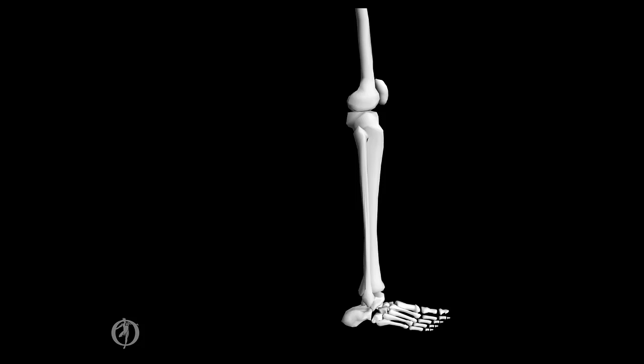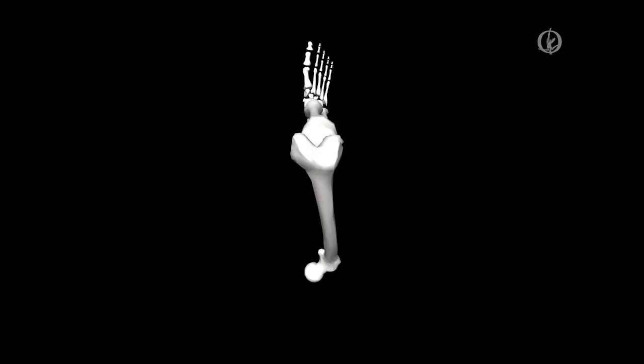The tibiofemoral joint connects the tibia and femur and has two degrees of freedom. The first axis of rotation is a medial-lateral axis through the femoral epicondyles, allowing flexion and extension — extension seen here in yellow, flexion seen here in blue. The second is a longitudinal axis through the shaft of the tibia, allowing movements in the transverse plane: internal rotation seen here in yellow, and external rotation seen here in blue. With two degrees of freedom, the knee is classified as a condyloid joint.